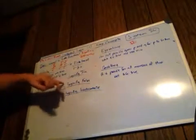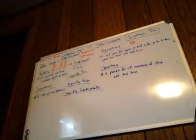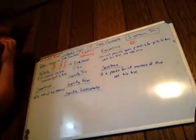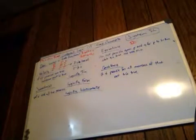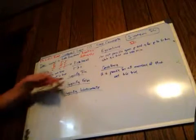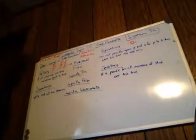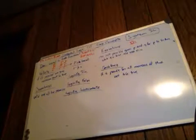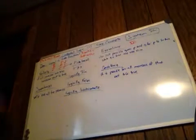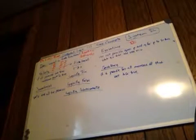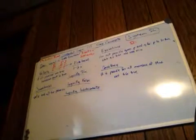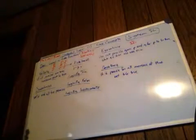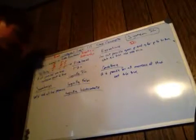Logically true, logically false, and logically indeterminate apply to a single sentence or proposition. Logically true—or truth functionally true—means it is not possible for the sentence to be false. Consider the sentence: 'It is Tuesday or it is not Tuesday.' That sentence is always true no matter what, because it is either Tuesday or it is not Tuesday every day of the year, always. So the statement 'It is Tuesday or it is not Tuesday' is logically true because it cannot possibly be false.